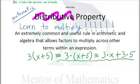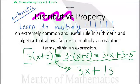So here's what you should write. When you see this, you should go straight to this. Because 3 times x is 3x, and 3 times 5 is 15.